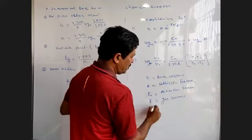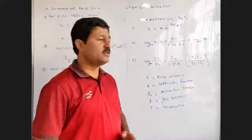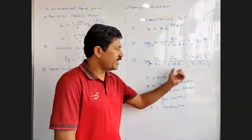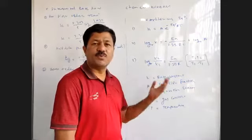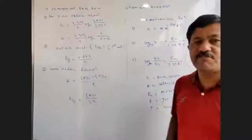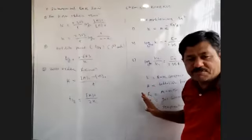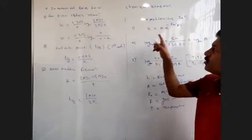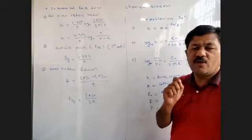T is temperature, T₁ is generally less than T₂. All of these formulas together cover all the numericals in this chapter. The formula alone is not enough — you need a little conceptual understanding: what is the half-life period, what is the initial concentration, what is the final concentration, what are the collision fractions.